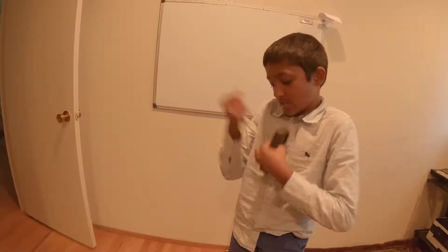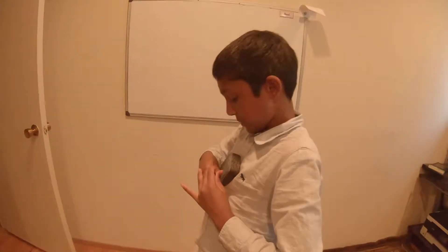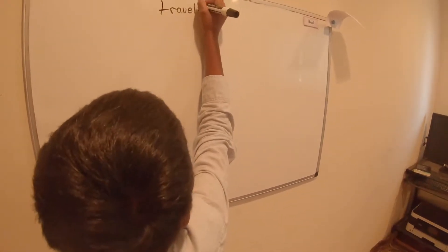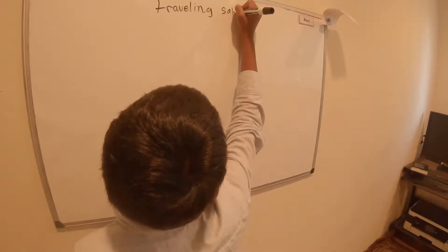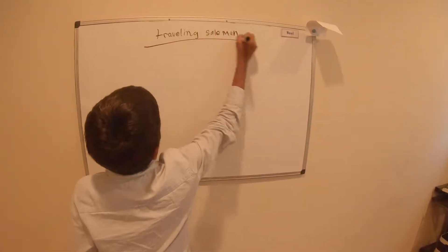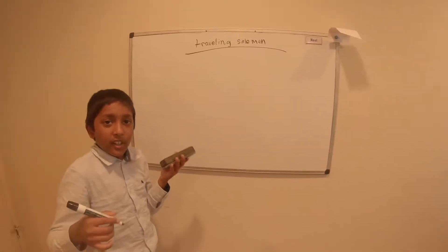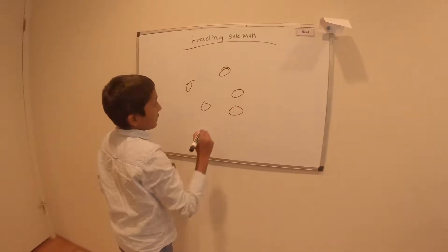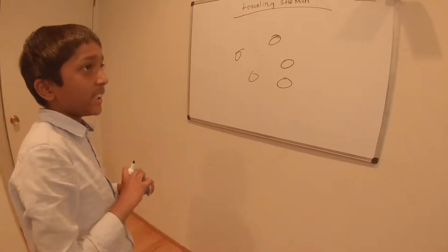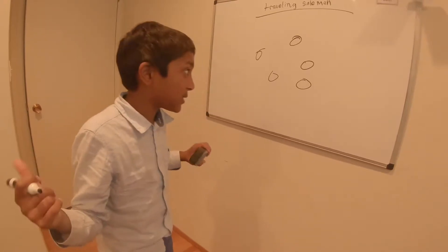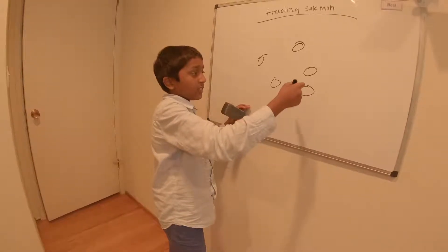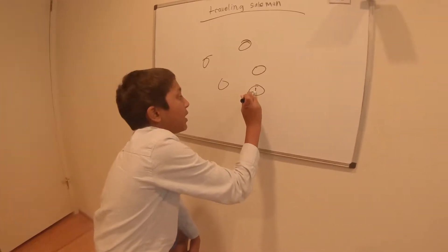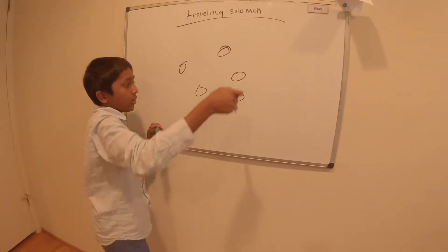So what is the traveling salesman problem? Basically, you have multiple points on a map—right now let's say five—and you need the quickest route that starts on point one and goes to all of these.